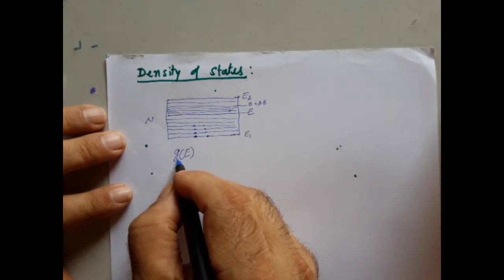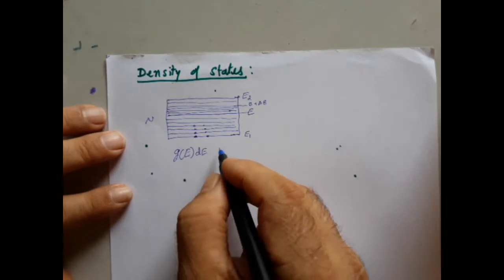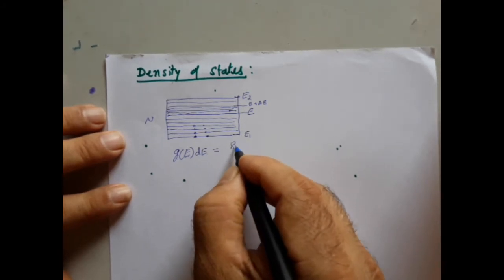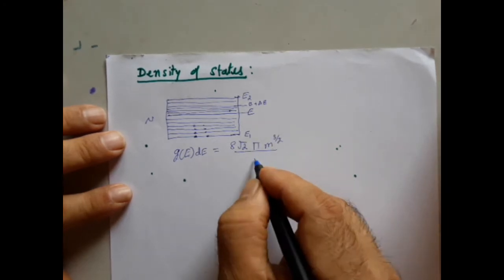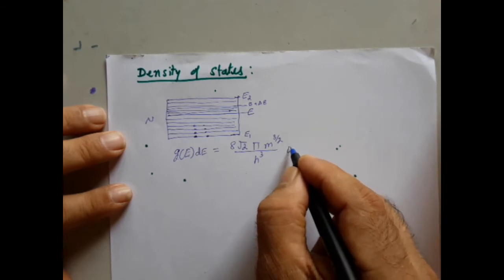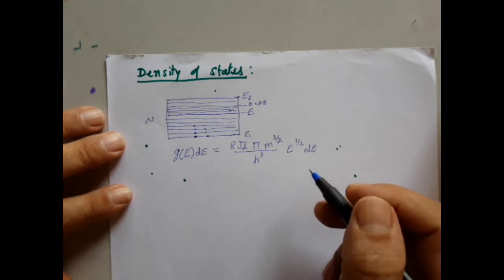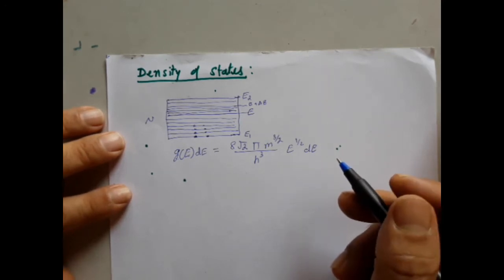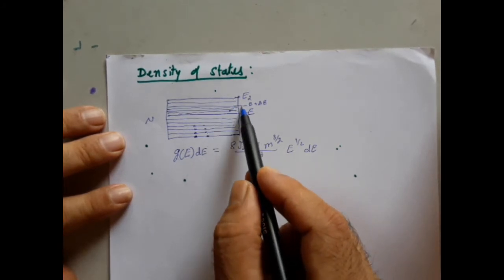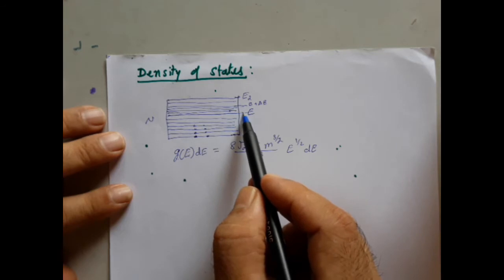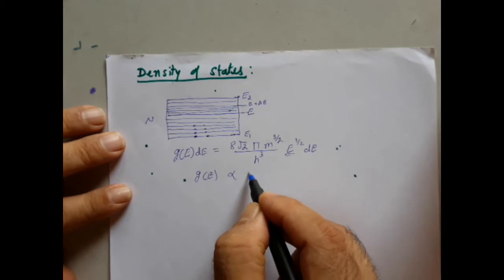The total number of energy levels in an energy range between E and E plus dE is given by 8√2 · π · M^(3/2) / H³ · E^(1/2) · dE. This is the expression for the number of energy levels per unit energy. Therefore, G(E) is directly proportional to the square root of E.